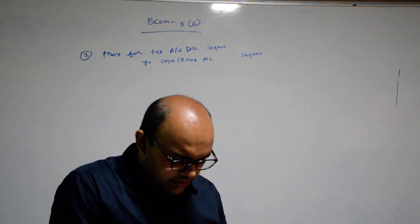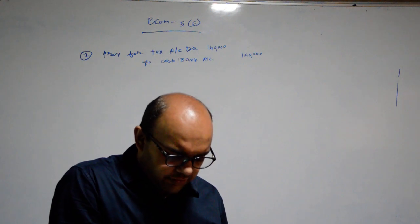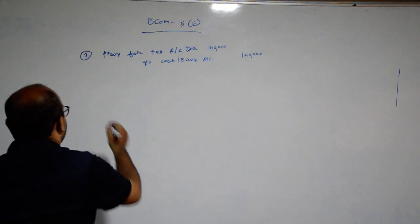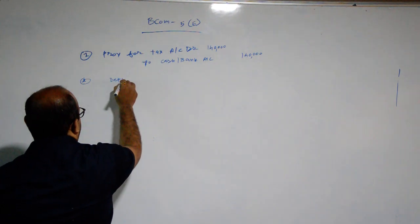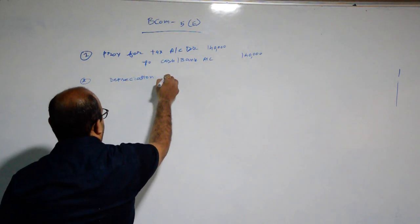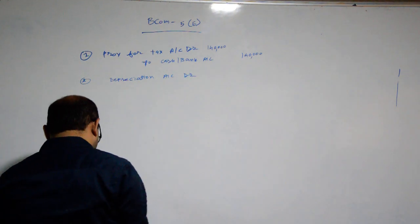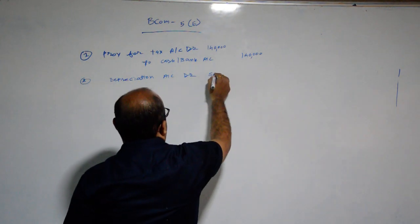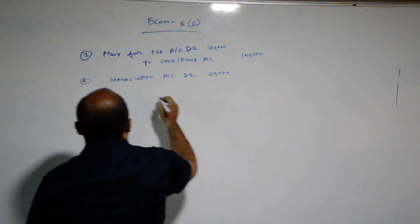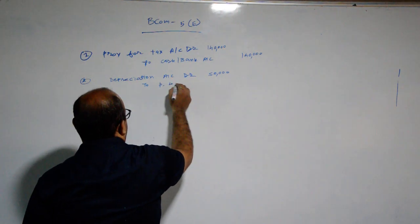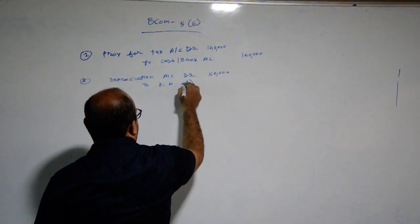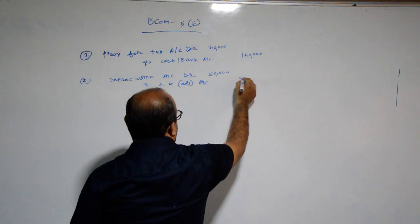Second, depreciation charge during the year. Machinery book is Rs. 50,000. Second general entry: Depreciation account debit. Amount is Rs. 50,000. To P&L Adjustment account Rs. 50,000.